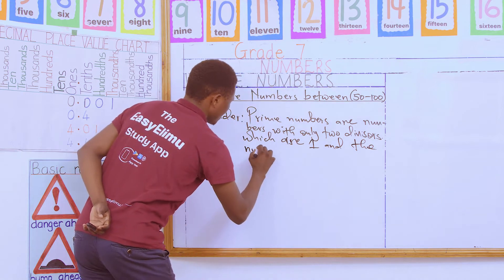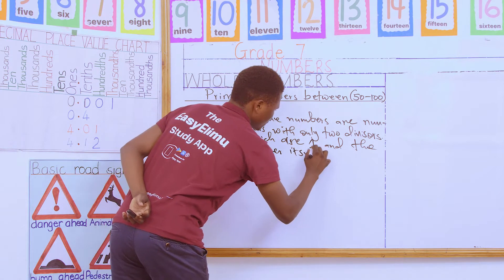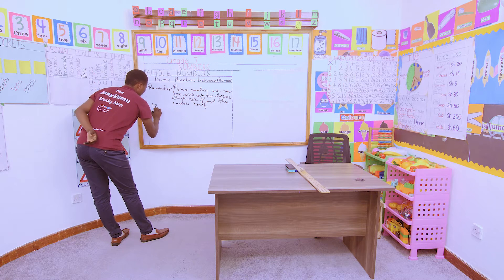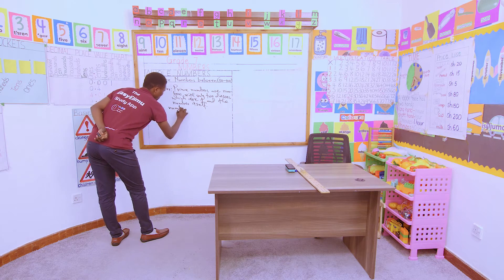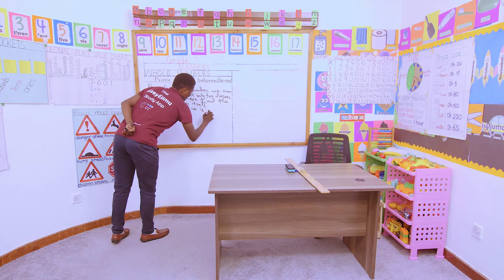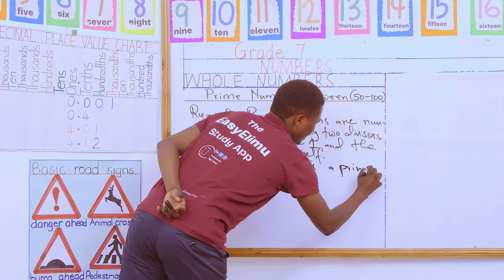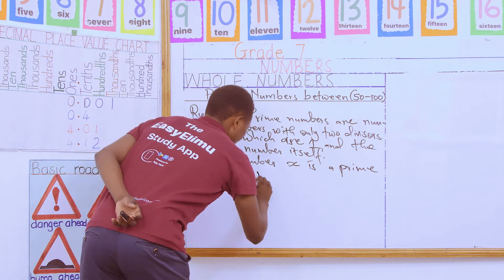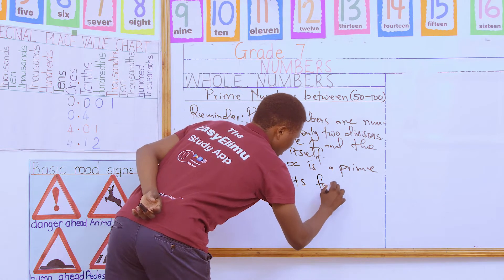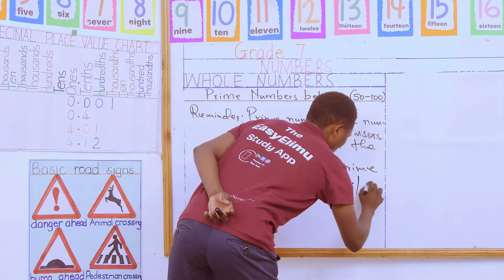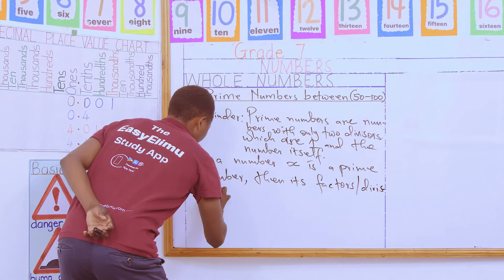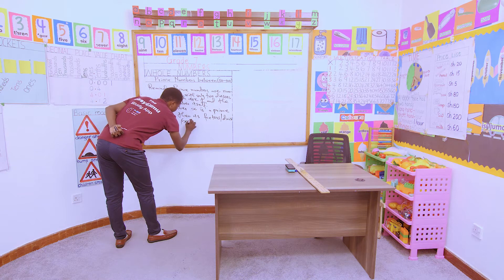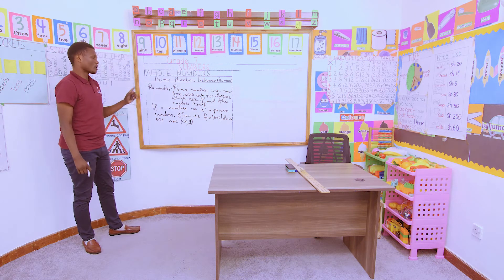Those two factors are one and the number itself. For example, if a number x is a prime number, then its factors or divisors are the number itself, which is x, and one.